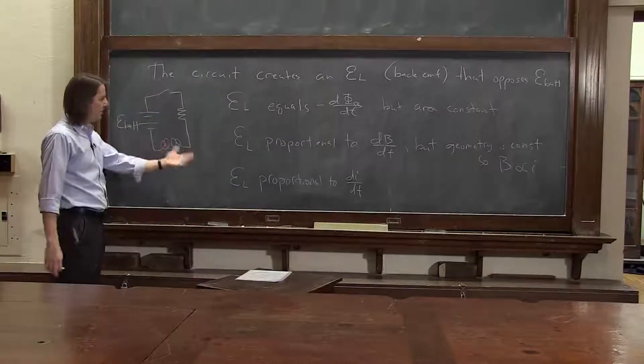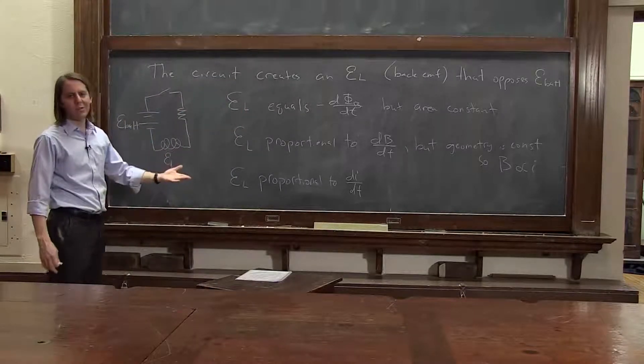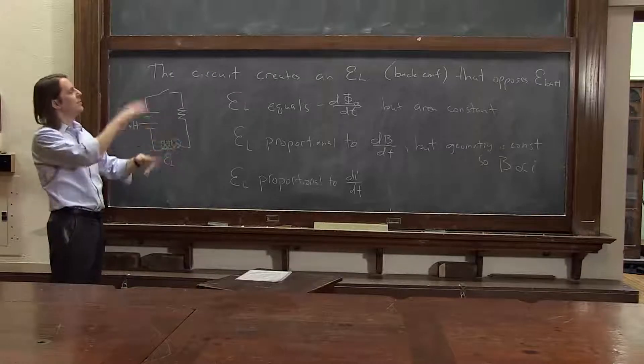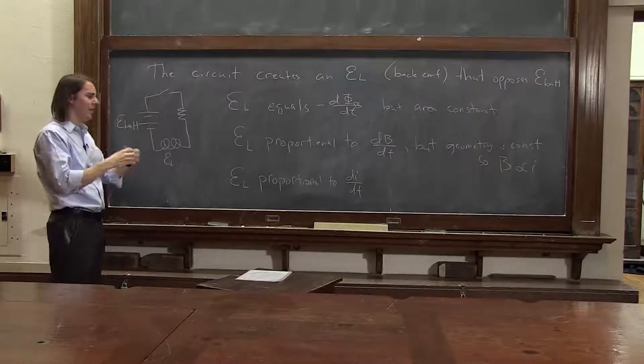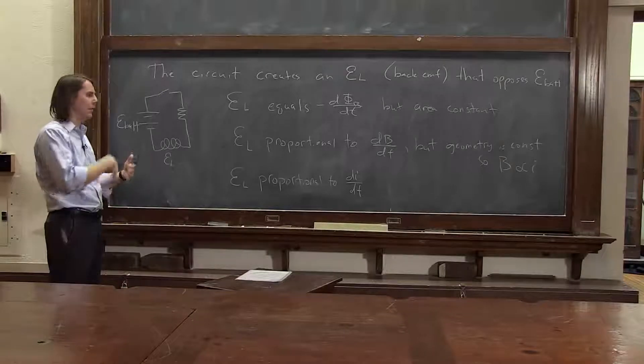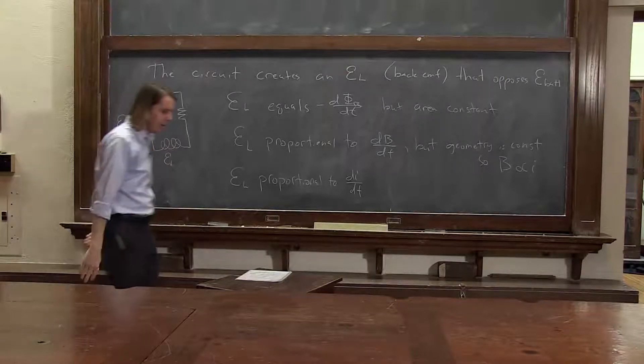The hard part is knowing what is the constant of proportionality between the two. You've got to do all these calculations and think about the field, the magnetic field inside, and the fringing fields, and is it an ideal solenoid, or is it not ideal? How many turns does it have?